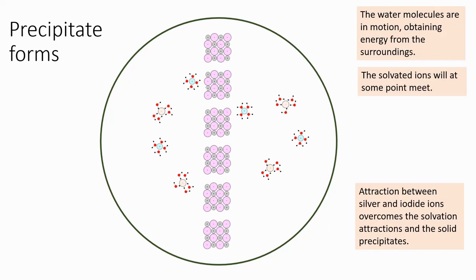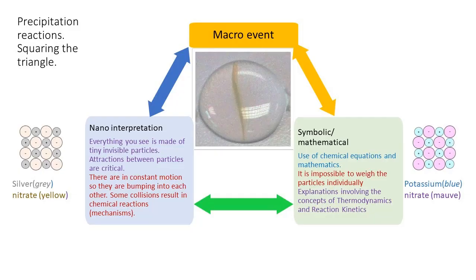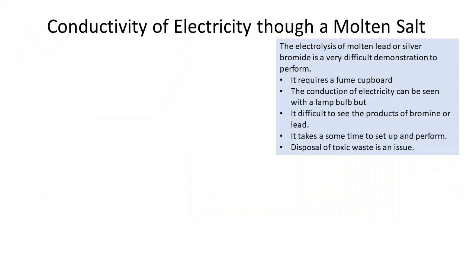All that remains are the spectator ions. Students' understanding of what spectator ions are is very very weak indeed. Understanding this chemistry was brought up by Alex Johnston in the 1980s when he realised that it was very very difficult for students to relate the macro events to the nano interpretations and to the symbolic equations, especially spectator ions. Understanding the small invisible particles that we have to deal with in chemistry is really difficult for many students. Atoms and molecules have been known for many years — even in primary schools students come across the name. But ions is something different.